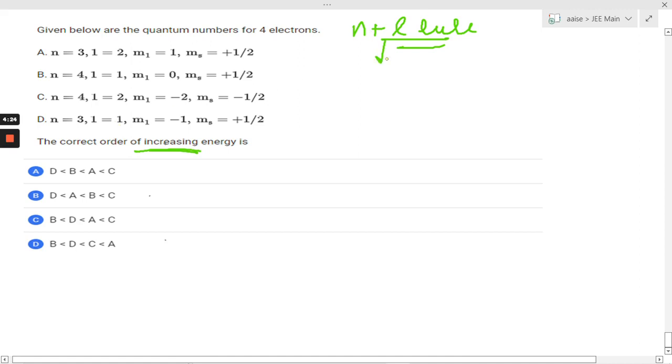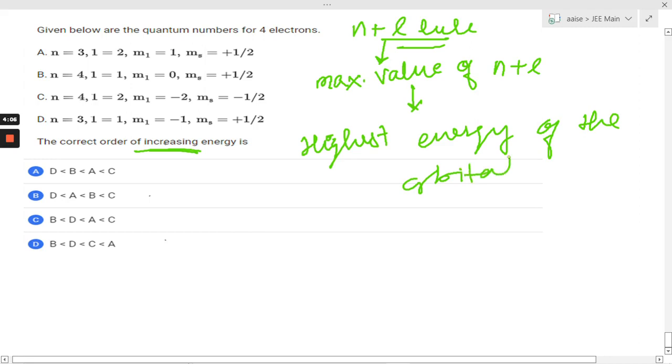According to the N plus L rule, the maximum value of N plus L means we are going to have the highest energy of the orbital.